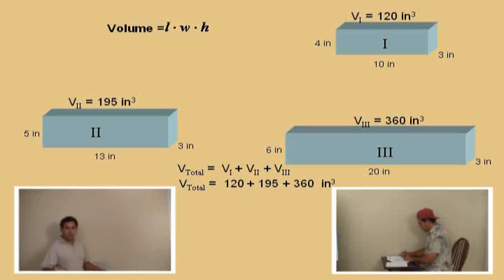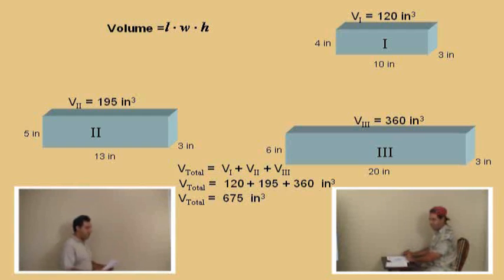Anyway, so finally, add them all up, Charlie. Go. Let's see you do some kung fu math on this. All right, we'll give you time to work it out. Enough time, Charlie. What's the answer? 675 inches. Very good. 675 cubic inches is our answer.